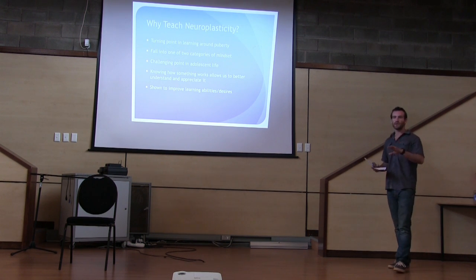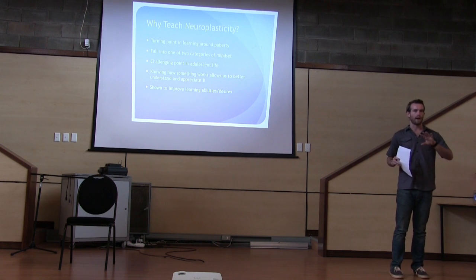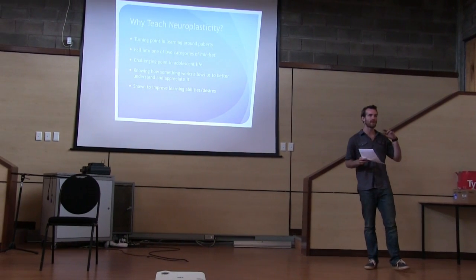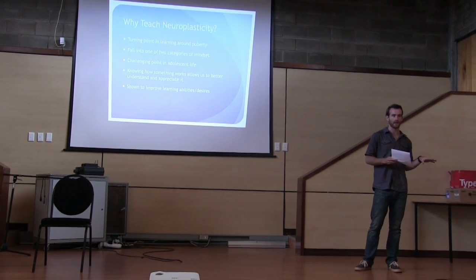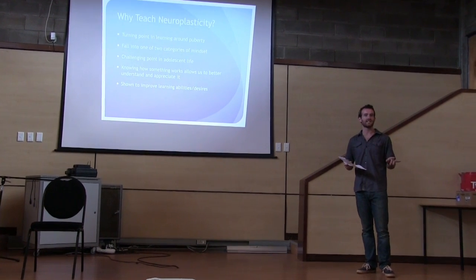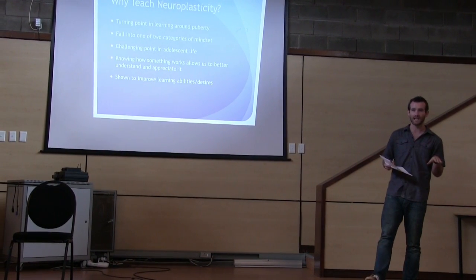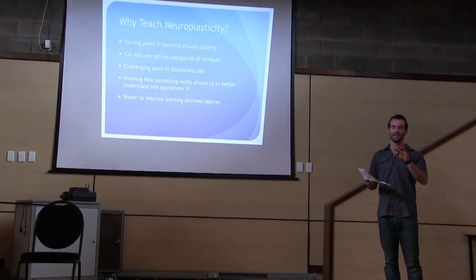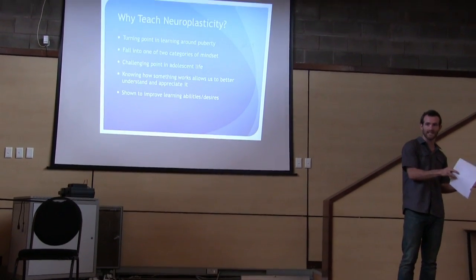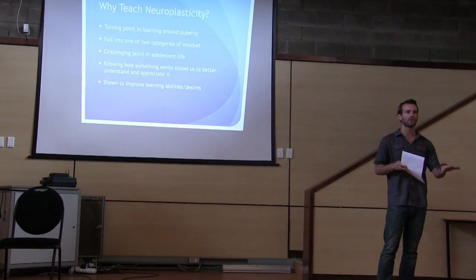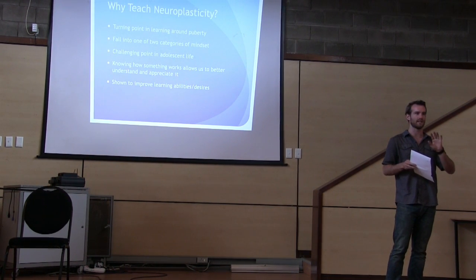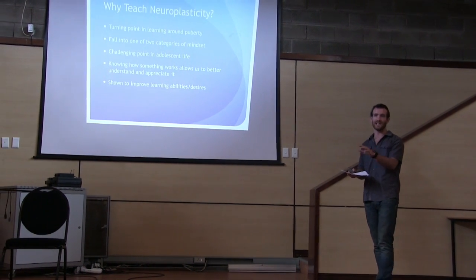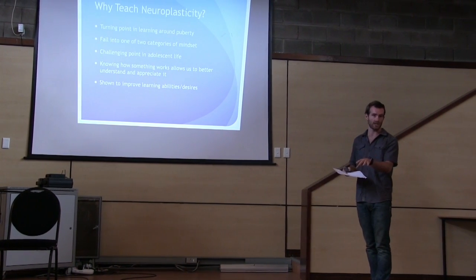So why are we teaching this? Students around fourth, fifth, sixth grade go through many changes — through puberty, but there's also a lot of chemical changes going on within the brain. One of these changes is that as the level of intensity of classes gets harder, they get set into one of two mindsets. They either fall into a fixed mindset, where if they can't learn something they believe they should just give up, believing it is an innate ability they don't have. Or they fall into a plastic mindset — plasticity — meaning it can be changed.